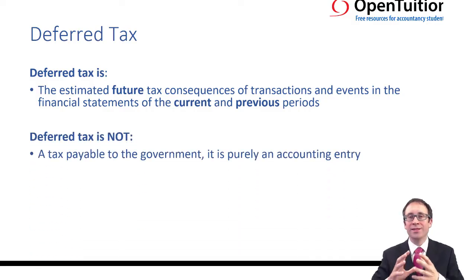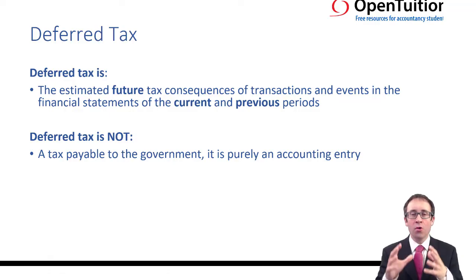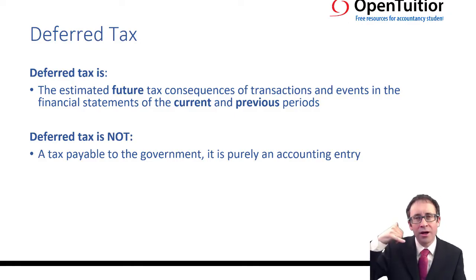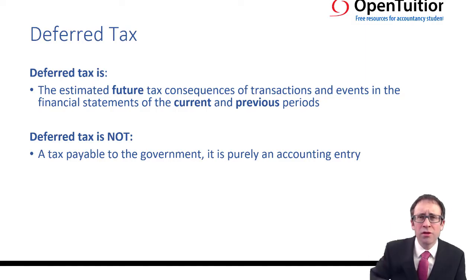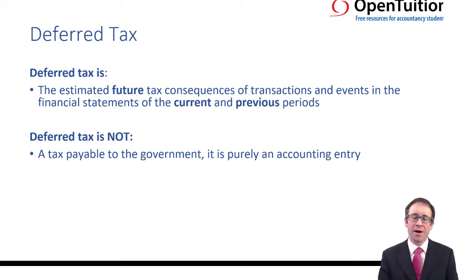The key thing to understand is that deferred tax is purely an accounting adjustment — just an accounting entry. When we account for deferred tax with the debits and credits, we do not adjust the tax payable balance. We leave it as the estimate that the tax authorities or a tax accountant has provided to us. We don't ring up Revenue and Customs to say we've done some deferred tax accounting and think we need to change the tax expense — they'd just put the phone down on you. It is purely an accounting entry to help us — or maybe confuse us — with regards to the matching concept.